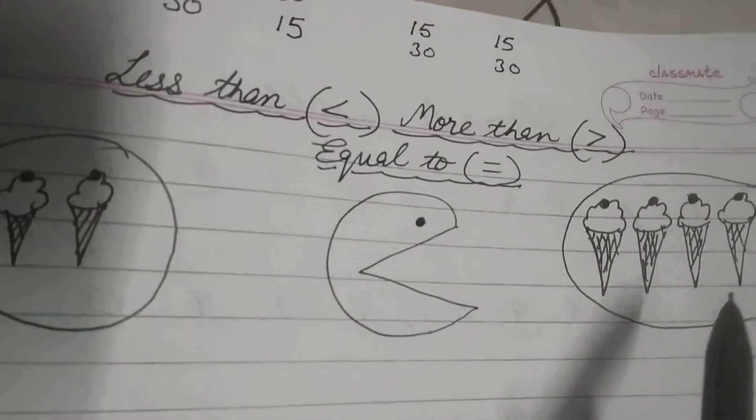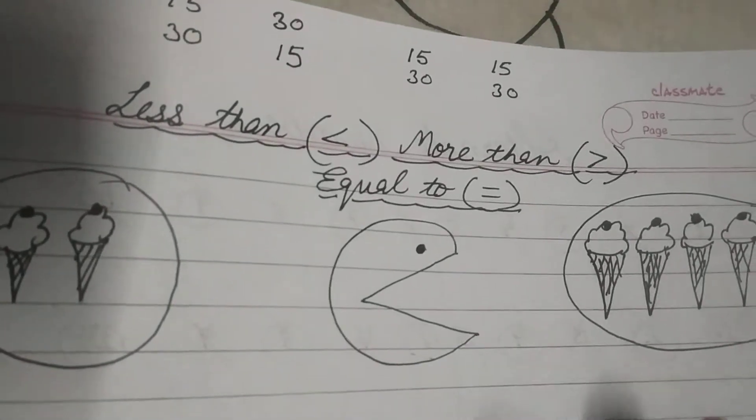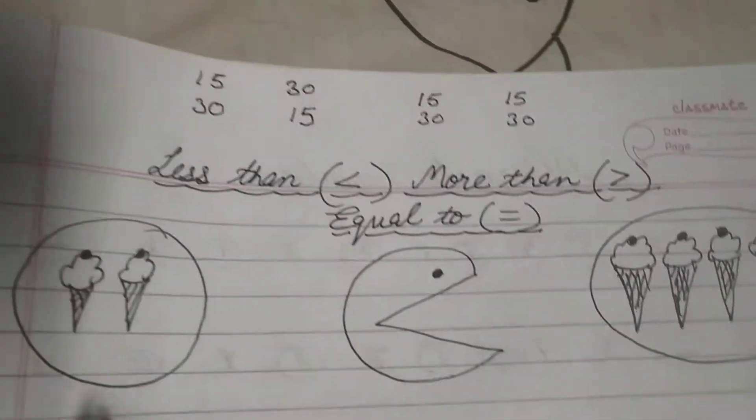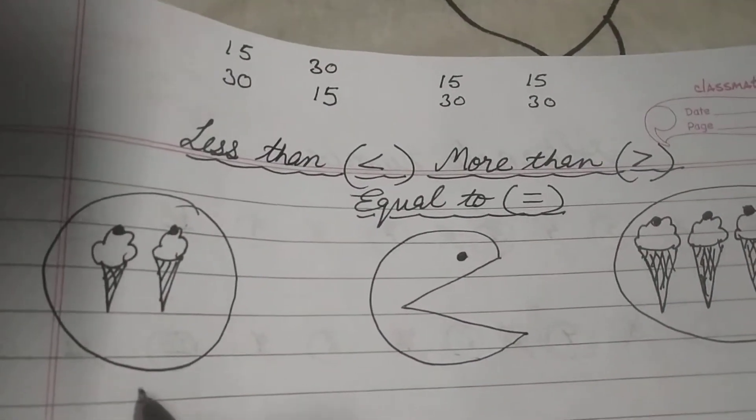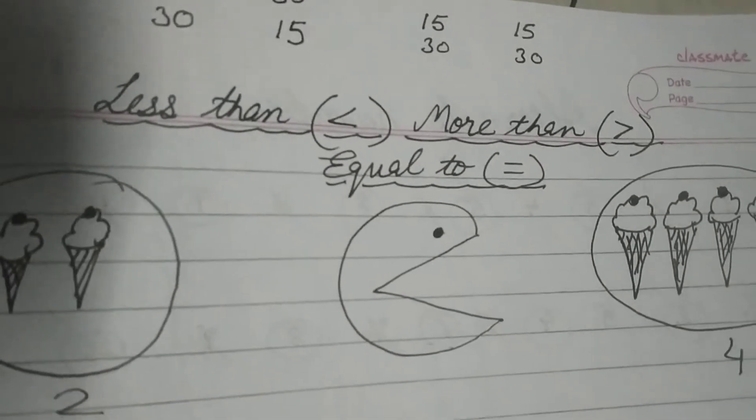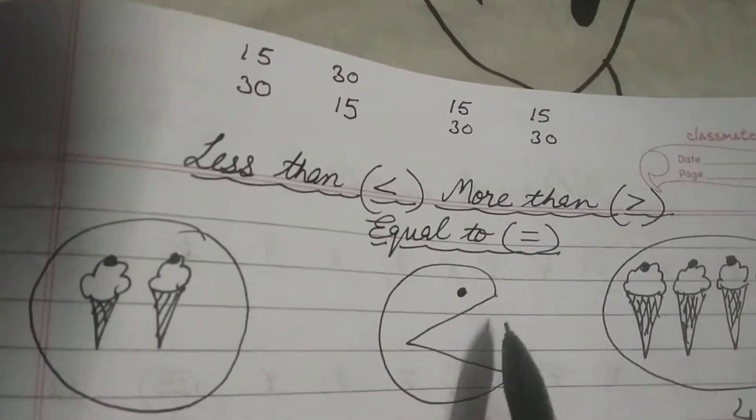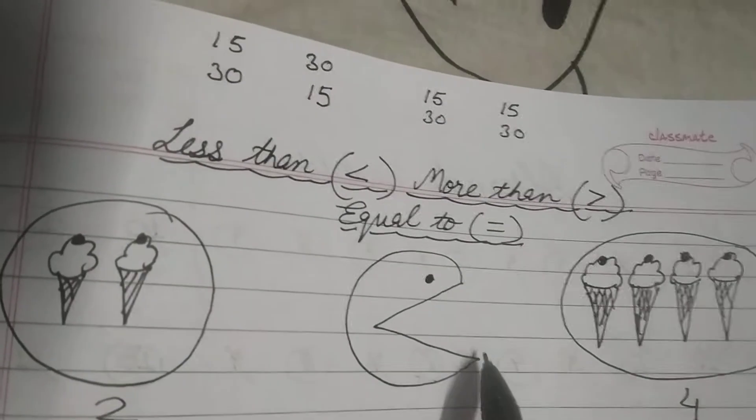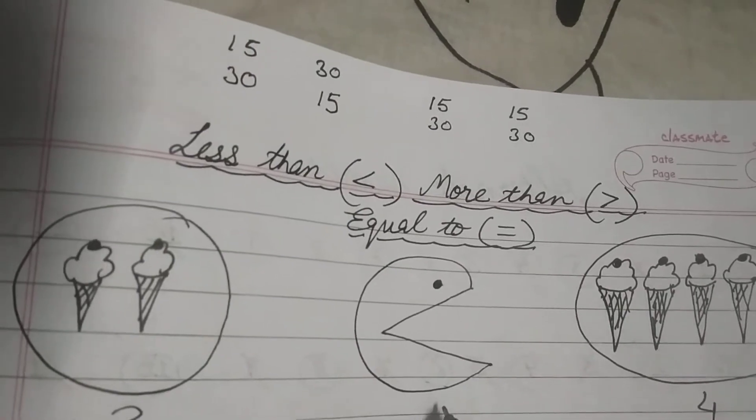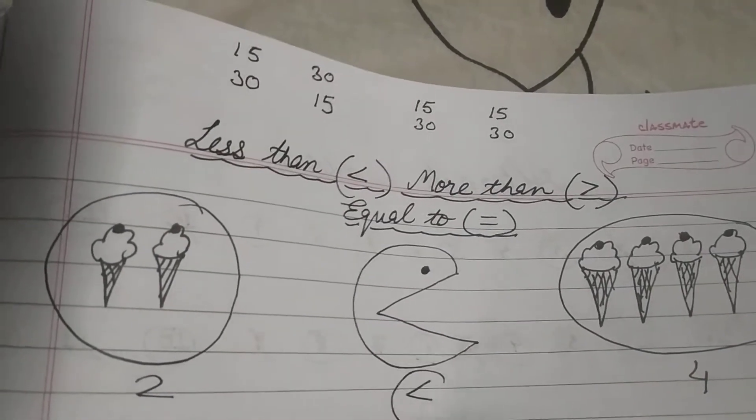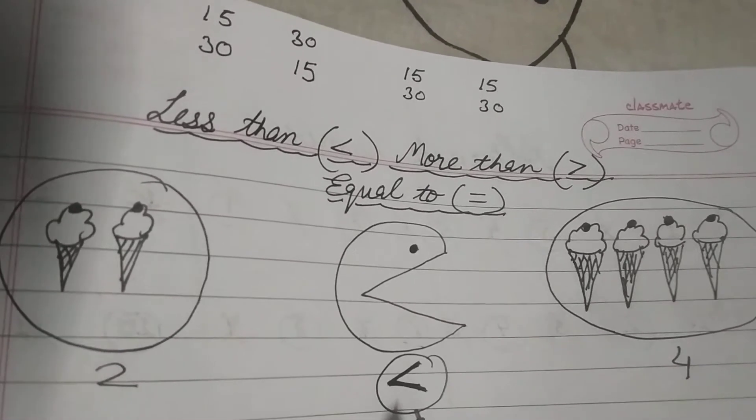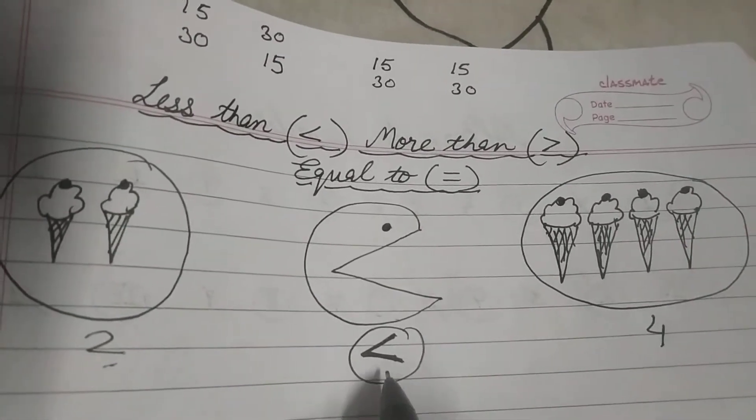Thik hai? To kya hoga? Ki mujhe zyada wali ice cream khaani hai, maine is taraf apna mouth khol diya. Now this symbol is, isko hum kaise likhenge? Yahan kitni thi ice cream? There were 2 ice creams. Here there were 4 ice creams. So we will say 2 is less than 4. Now how did I open my mouth? I had opened my mouth here. Zyada wali side, we open up our mouth. So we will say this symbol. This symbol is less than. 2 is less than 4.